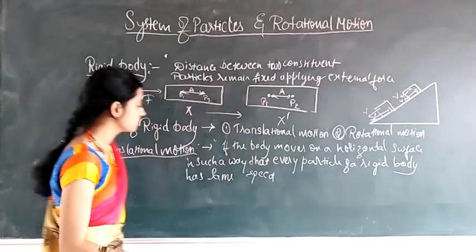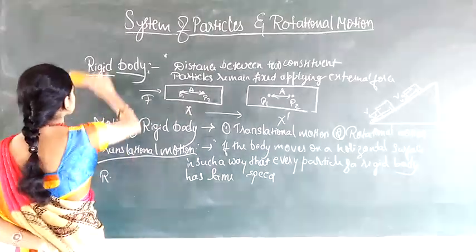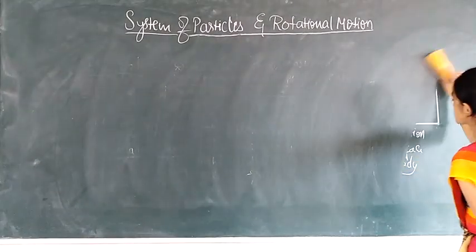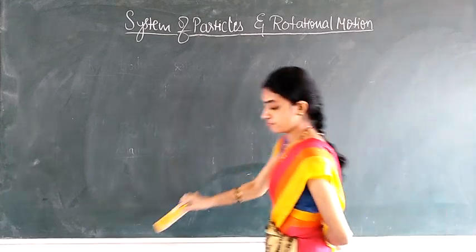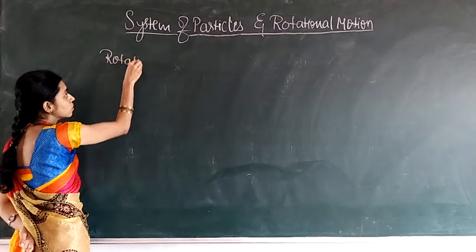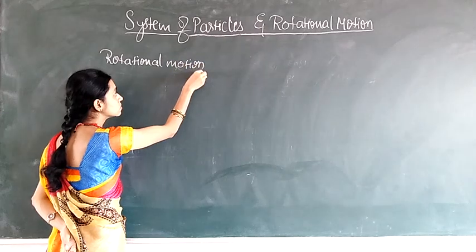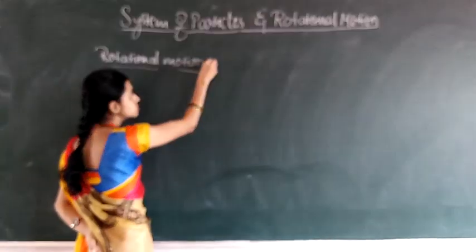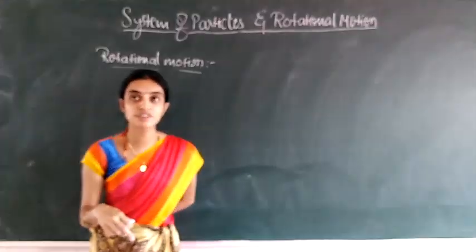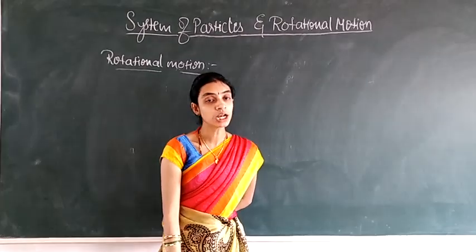Next, about rotational motion. The motion of a giant wheel or a ceiling fan are examples of rotational motion.